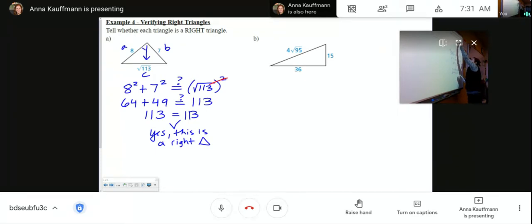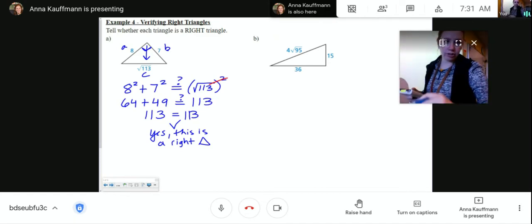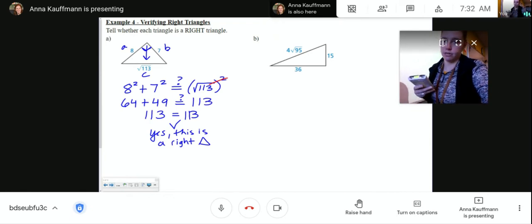So yes, that is a 90 degree angle. If those two numbers don't match each other, it doesn't matter if it's 113 or not. If those two numbers don't match each other, then no, it is not a right triangle.